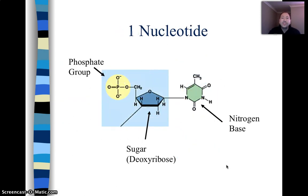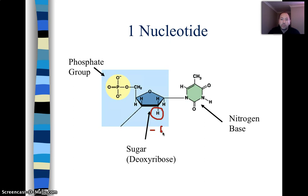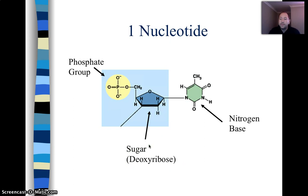Here is a nucleotide. A nucleotide is made up of three parts: a phosphate group, a five-carbon sugar called deoxyribose, and a nitrogen base. The reason it's called deoxyribose is that it's missing an oxygen group. Typically, what would be attached to the carbon would be an O and an H to give us ribose, but since we get rid of this oxygen, we call it deoxyribose.